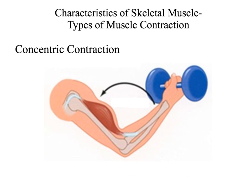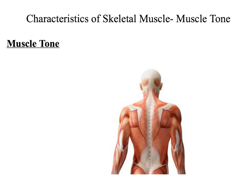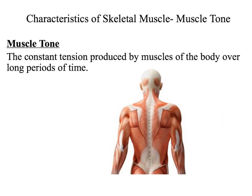The first type of isotonic contraction is a concentric contraction. In a concentric contraction, the tension in the muscle increases while the length of the muscle decreases. The last type of isotonic contraction is the eccentric contraction. During an eccentric contraction, the tension in the muscle increases while the length of the muscle also increases. Finally, there are some muscles that are under constant tension over long periods of time; this is known as muscle tone. Examples include the muscles of the lower back, which are needed to maintain posture.